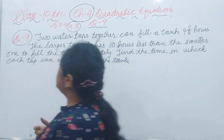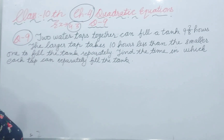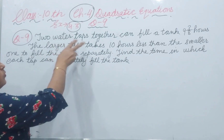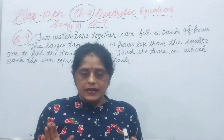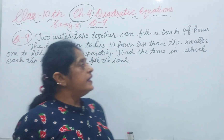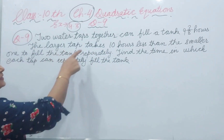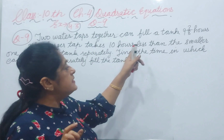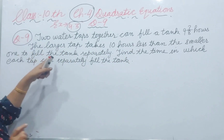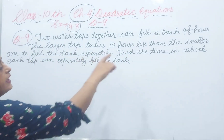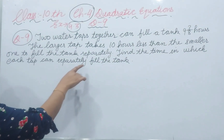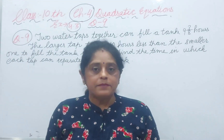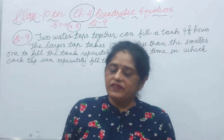First of all, what's the statement? Two water taps together can fill the tank in 9 and 3/8 hours. The larger tap takes 10 hours less than the smaller tap. Find the time in which each tap can separately fill the tank.